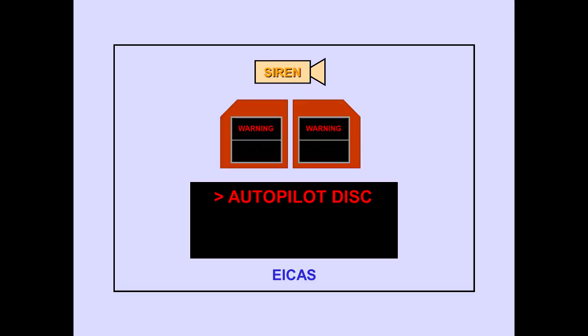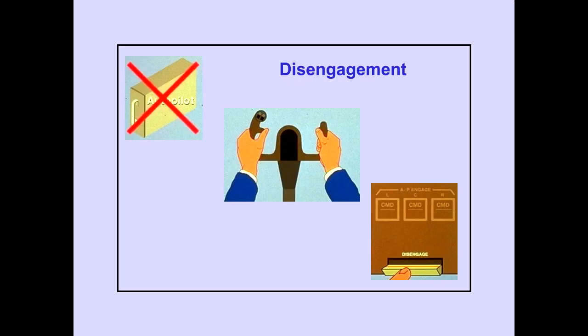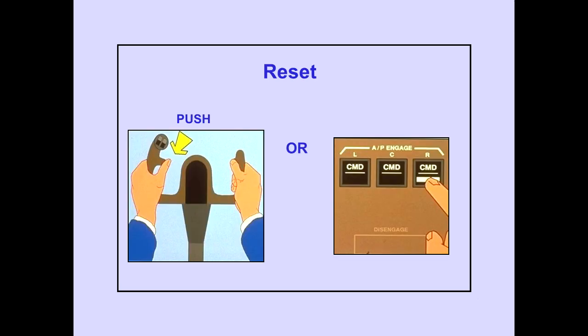The ICAS warning message, Autopilot Disconnect, is displayed when the selected autopilots have disengaged. Disengagement occurs automatically if an autopilot fails, when either control wheel disengaged switch is pushed, or when the autopilot disengaged bar is pushed down. Pushing either disengaged switch or engaging an autopilot resets all autopilot disengaged oral and visual warnings. The oral warning will still sound for one second.